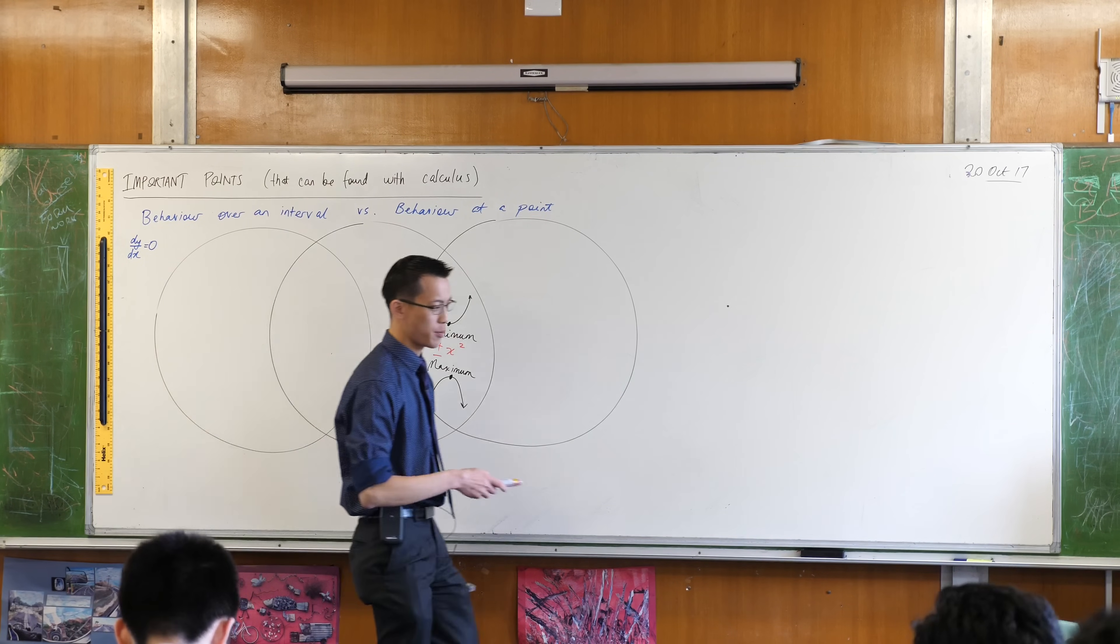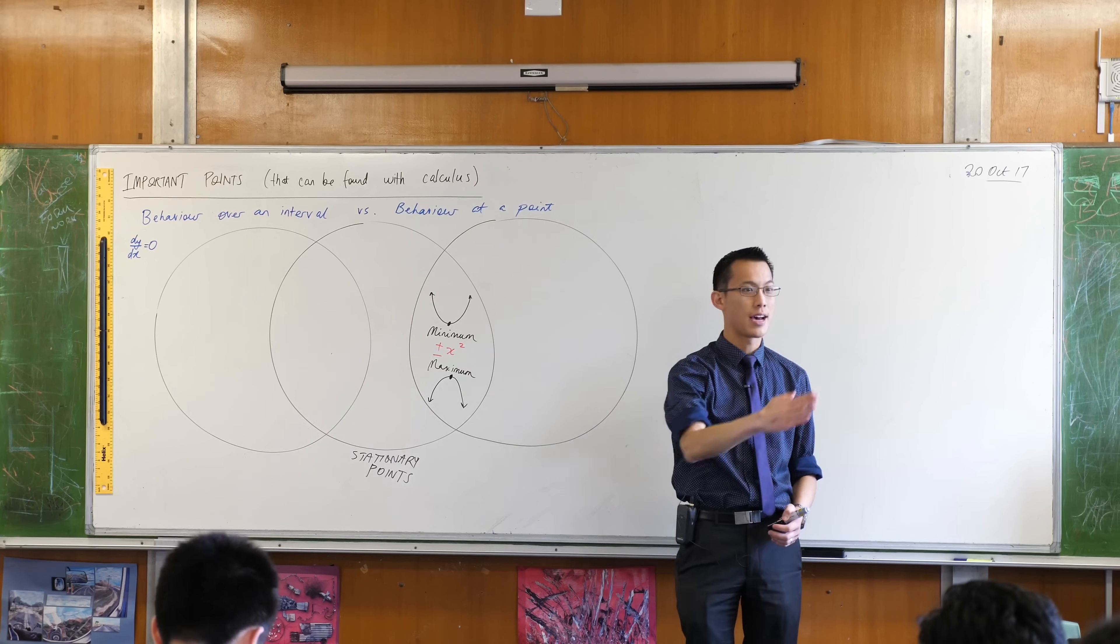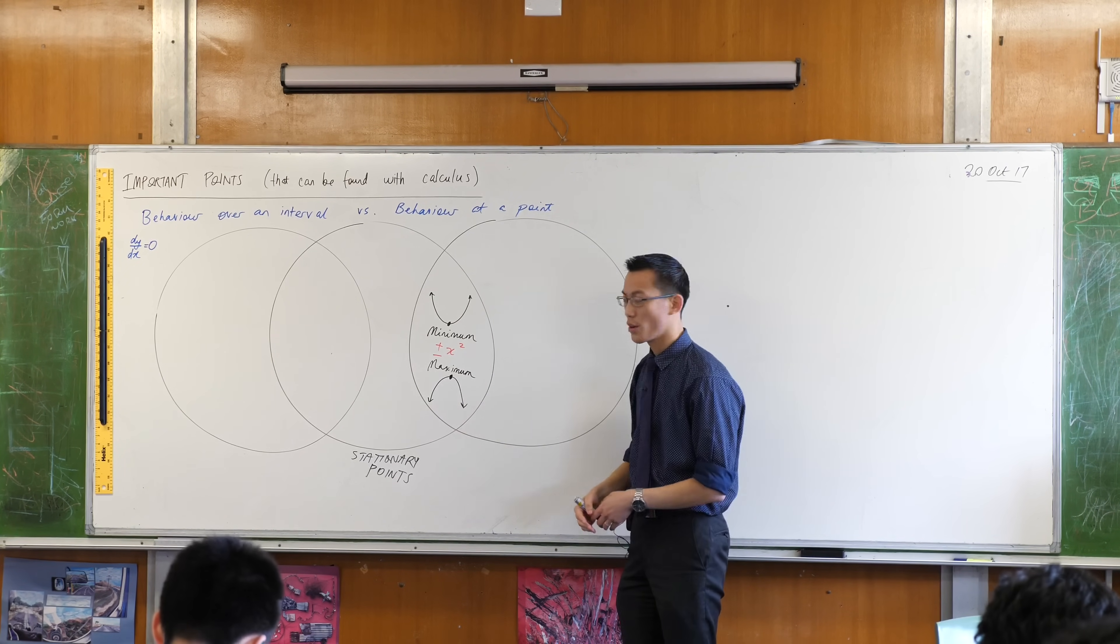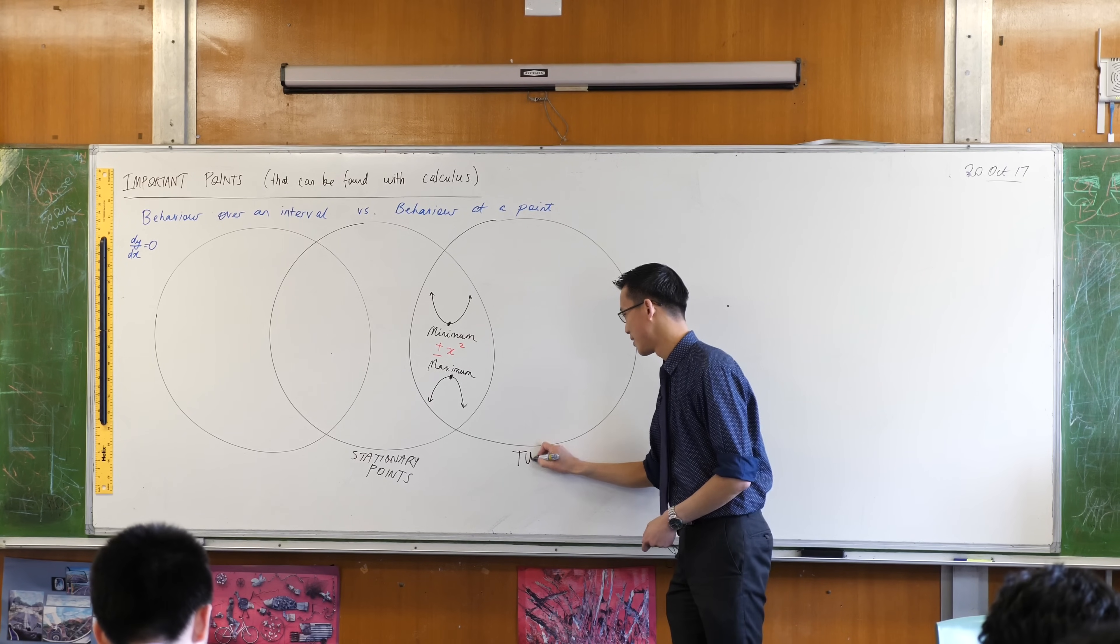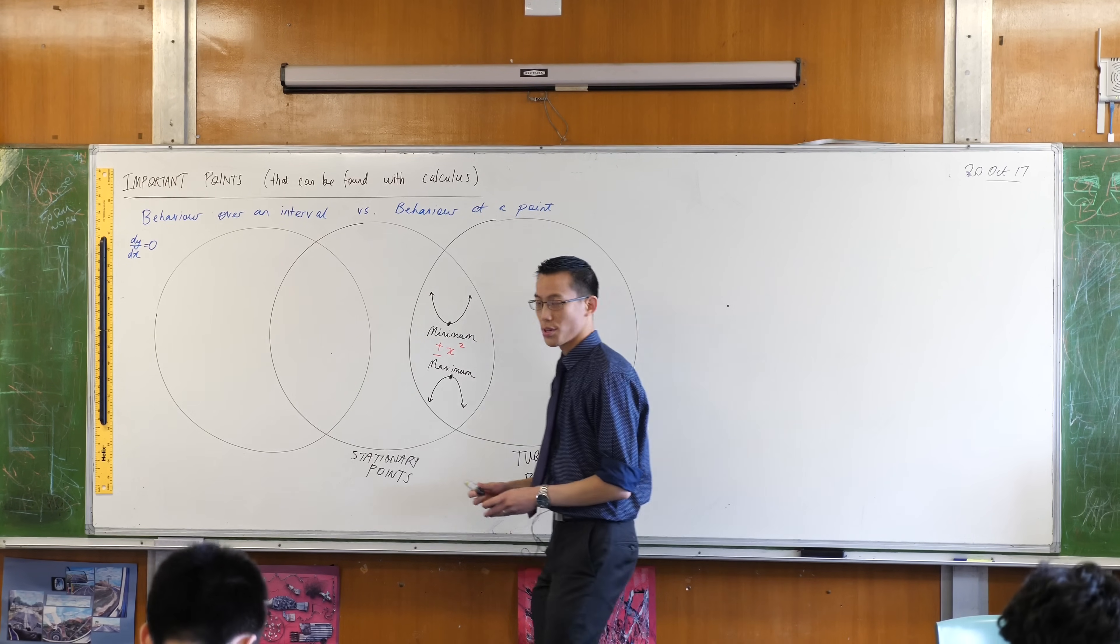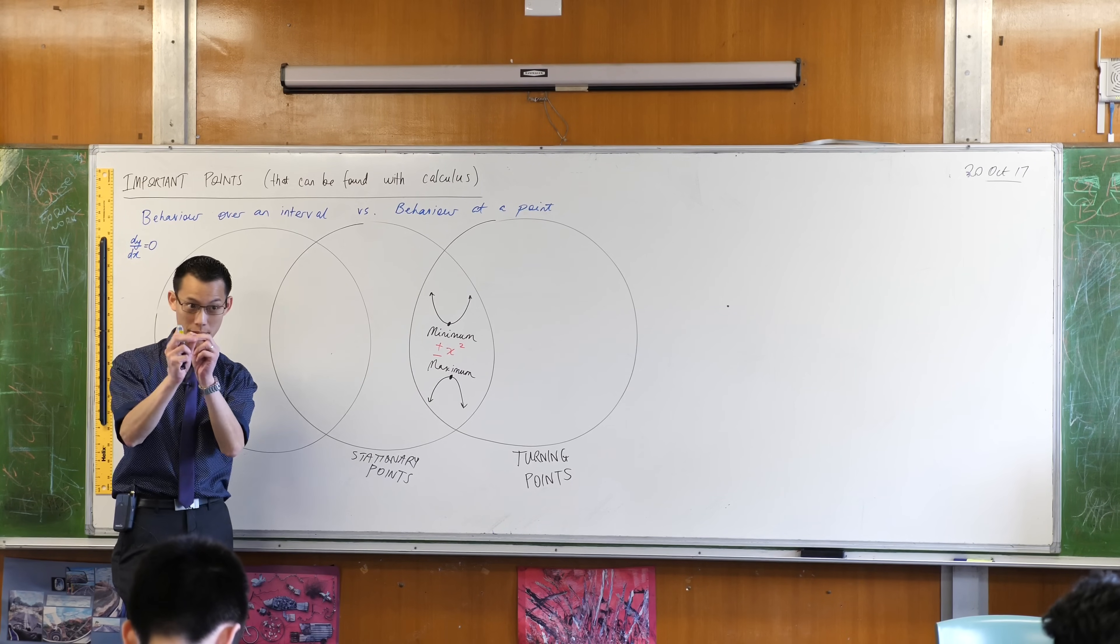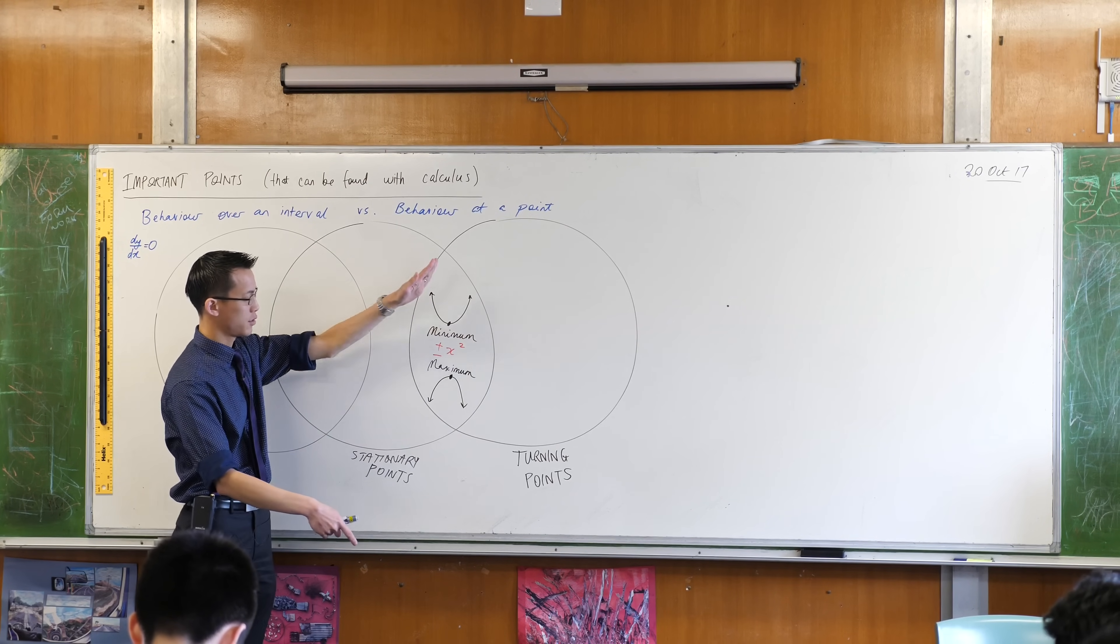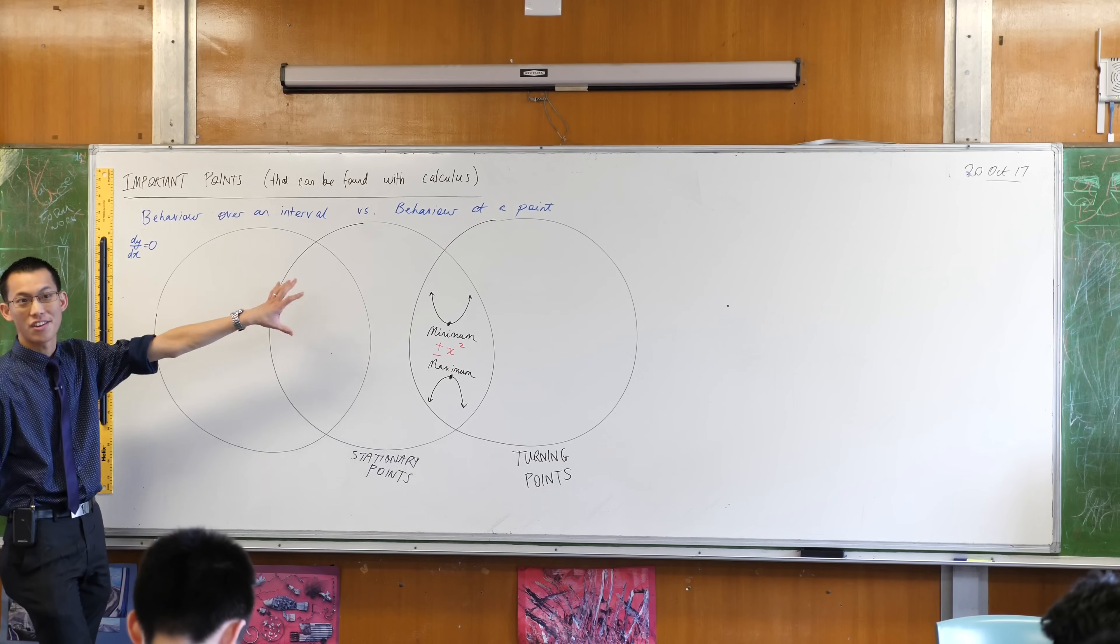Because these stationary points are a spot where you go from up to down or from down to up, we say that the function turns around at that point. For that reason, these guys are not just stationary points, we also call them turning points. Those spots can equally be described as stationary points because at that point they pause for a minute, but they can also be called turning points because if you look on the left and the right, you find there's a down-up or up-down change happening.